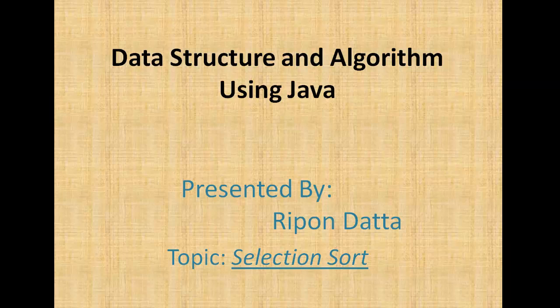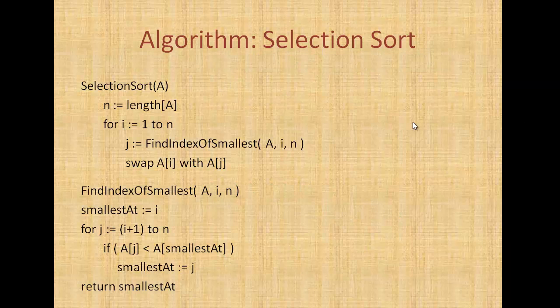Hey guys, welcome to Data Structure and Algorithm using Java. I am Rippon. Now I am going to discuss about selection sort and how to implement it. So let's get started. The selection sort algorithm sorts an array by repeatedly finding the minimum element from the unsorted array and putting it at the beginning of the array.